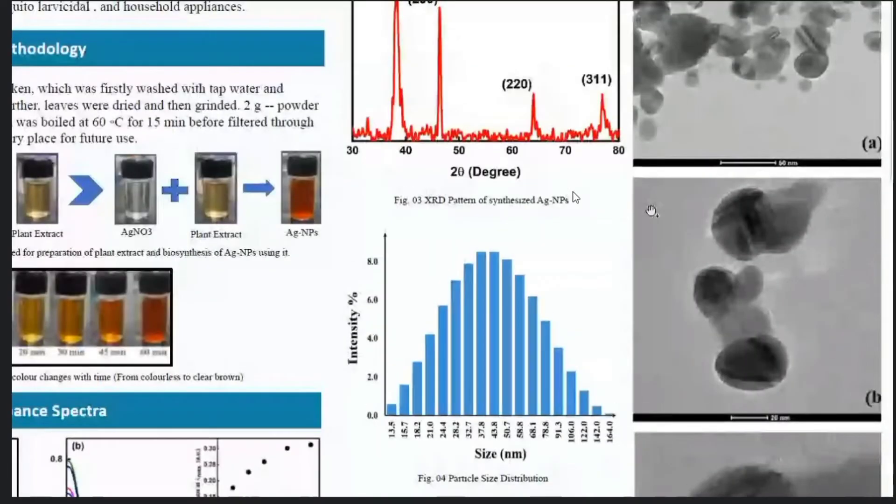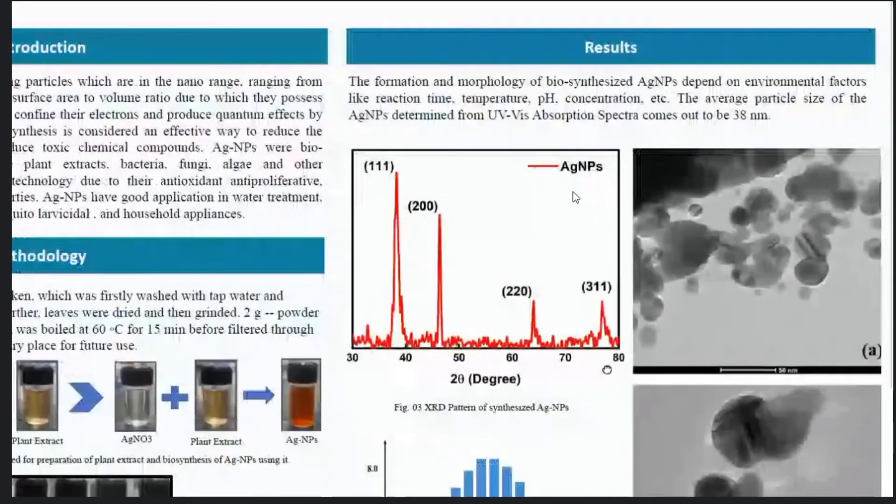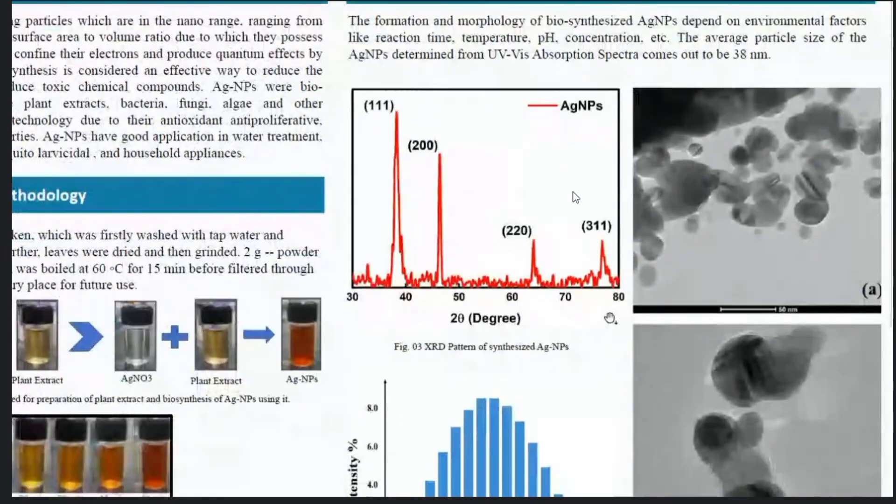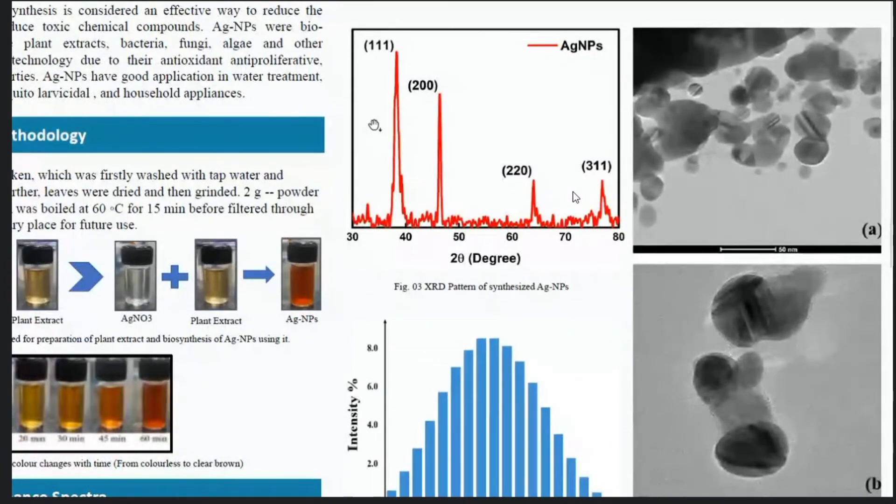Then we will go to characterization of the samples. This is the XRD pattern for the same plant. The four major peaks are obtained. This is the peak of highest intensity corresponding to 111 plane. This has been matched to the JCPDS file for silver, indicating the presence of nanocrystalline silver.